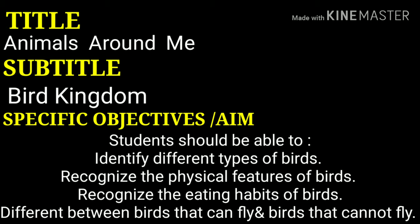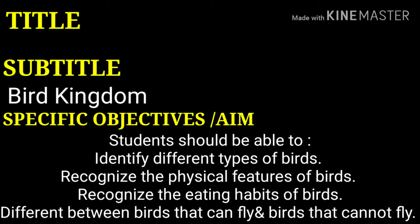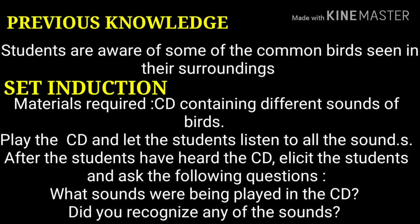The subtitle is 'Bird Kingdom'. Then for specific objectives or aim, you should write something like: students should be able to identify the different types of birds, recognize the physical features of birds, recognize the eating habits of birds, and differentiate between birds that can fly and birds that cannot fly.